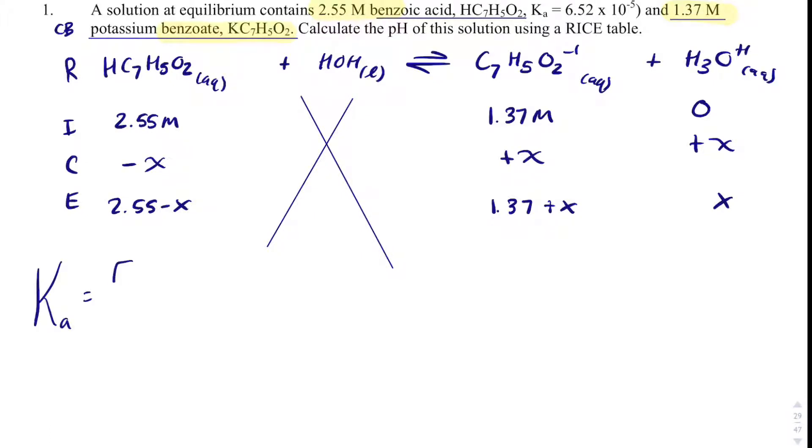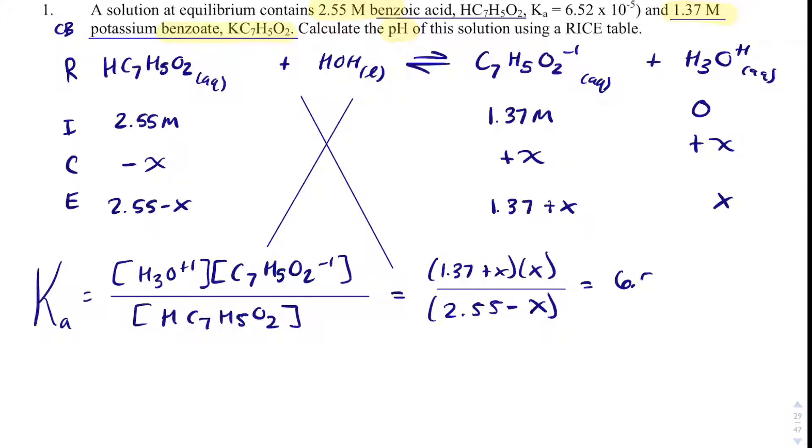And so what I can do is write a Ka expression. And because I just want the pH, it's all that's wanted here. If I can get x, I just take the negative log of that, and that will be the pH. So this is going to equal 1.37 plus x times x divided by 2.55 minus x. That all will equal the Ka, which is 6.52 times 10 to the minus 5. I can use the 5% rule to get rid of plus x and minus x, and so I'm going to do that.